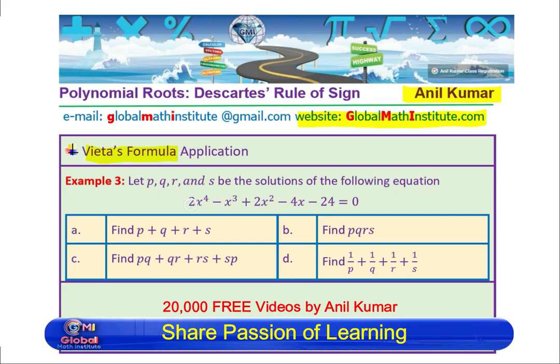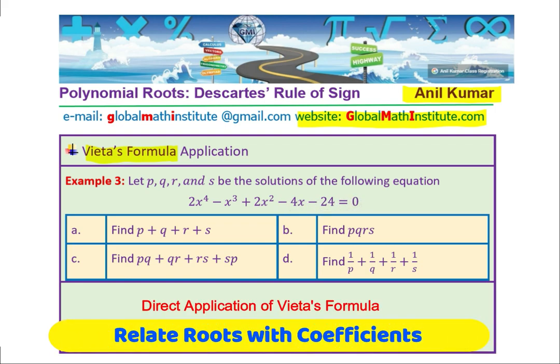Example: A quartic equation is given to you, degree 4 polynomial: 2x^4 - x^3 + 2x^2 - 4x - 24 = 0. Find: (a) the sum of roots p + q + r + s, (b) the product pqrs, (c) pq + qr + rs + sp, and (d) 1/p + 1/q + 1/r + 1/s, where p, q, r, s are the four roots of the given equation.